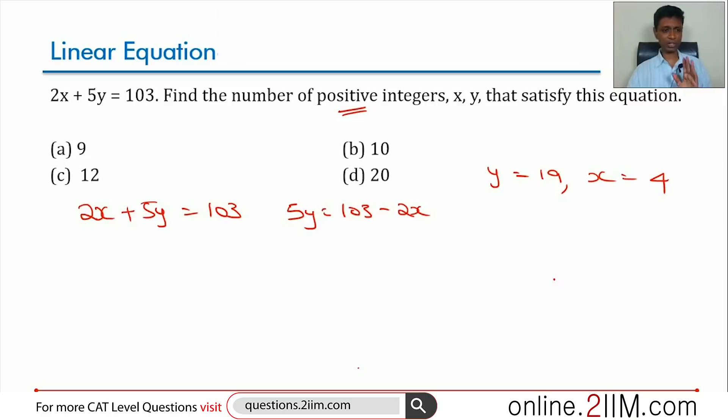We are just trying to find the first value that works, going for the highest possible value of y or the smallest possible value of x. We found that out. Think about this: 5y is 103 minus 2x, we found one value. 5 into 19 equals 103 minus 2 into 4.